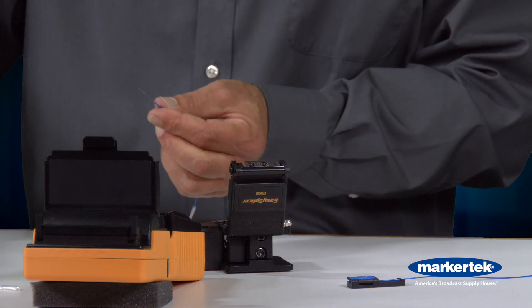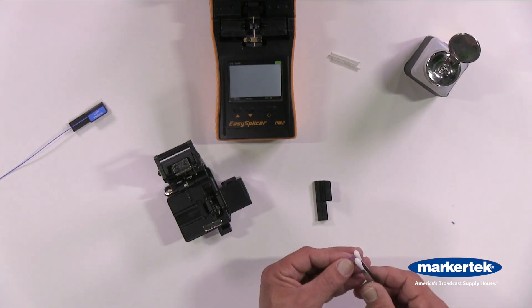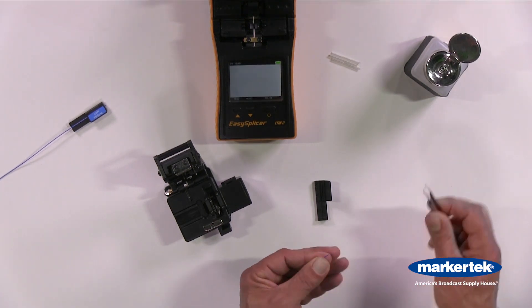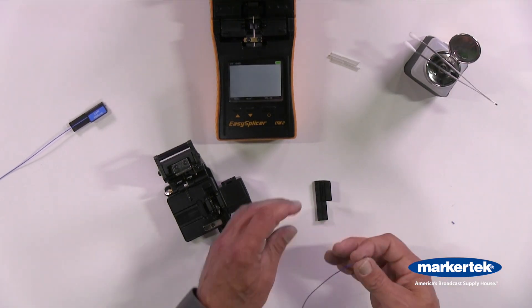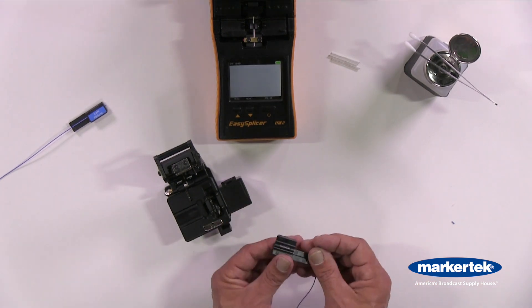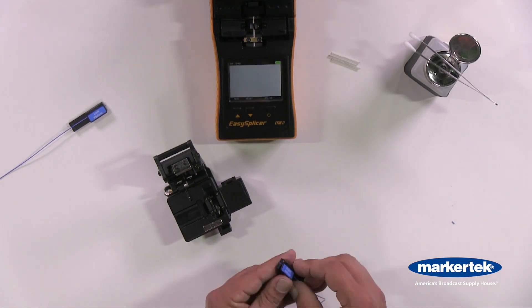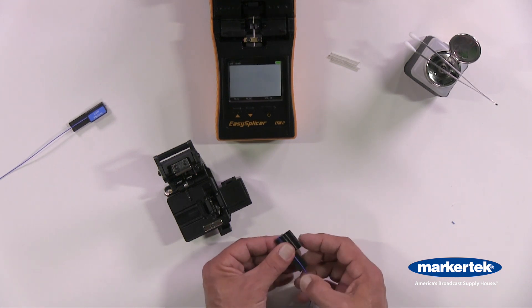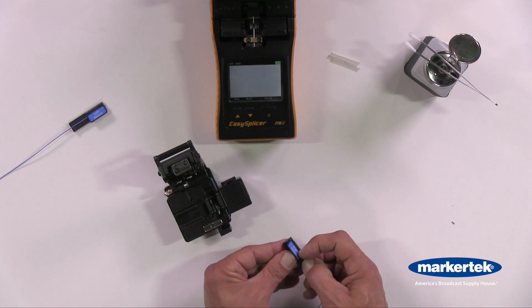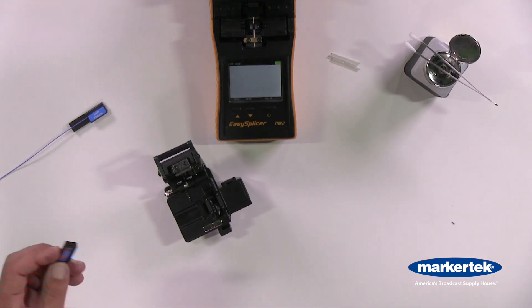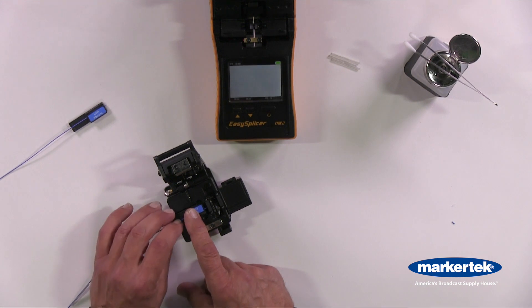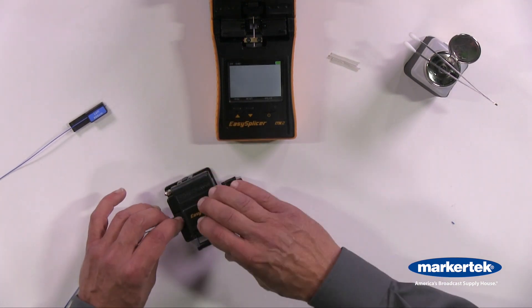Remove the acrylate layer. Make sure it's in the V-Groove. Cleave.